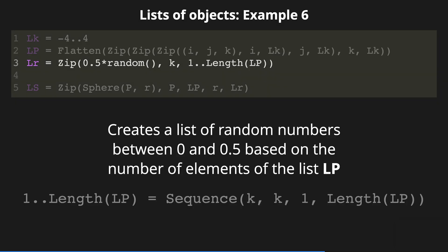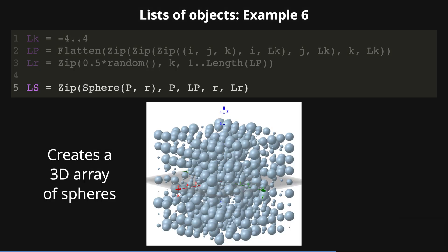Then, we create a list of random numbers between 0 and 0.5 based on the number of elements of the list Lp. Finally, we use the zip command to create the spheres using the expression sphere with variables P and R. P is the point that belongs to the list Lp and R is the radius that belongs to the list Lr.